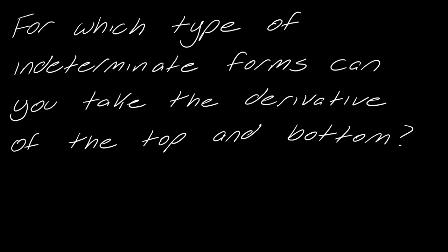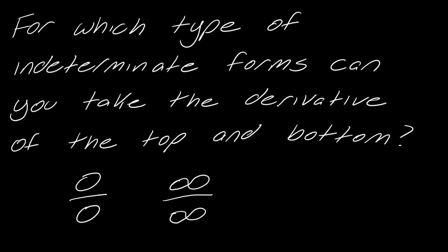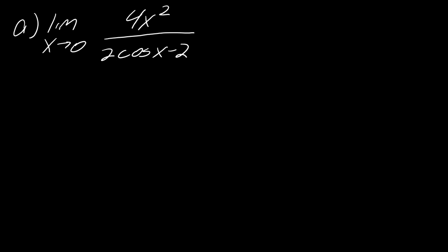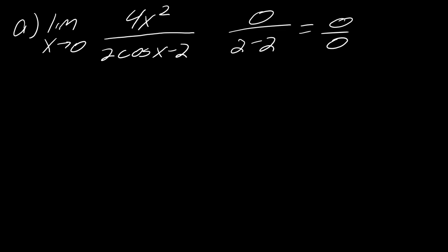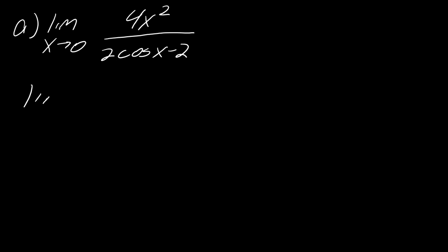For which indeterminate forms can you take the derivative of the top and bottom right away? If you get either 0 over 0 or infinity over infinity, then you can just go ahead and take the derivative of the top and the bottom. For example: the limit as x approaches 0 of 4x² over (2 cos x − 2). The first thing to do is identify the indeterminate form. Plugging in gives 0 over (2 − 2), which is 0 over 0.